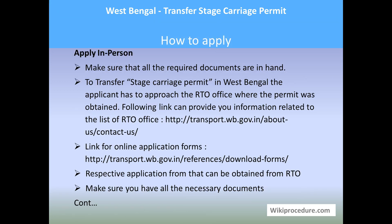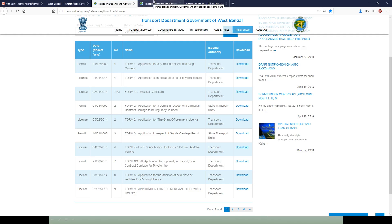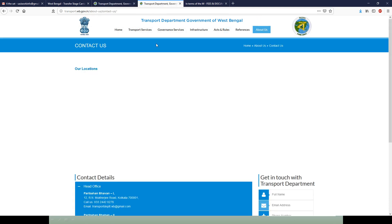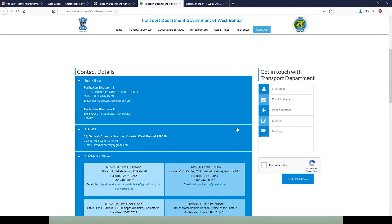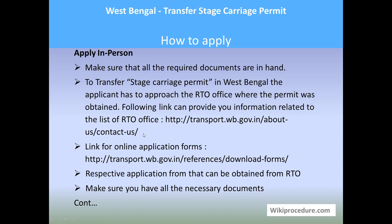Let us see how to apply in person. Make sure all the required documents are in place, because missing even one document will cause your application to be rejected. To transfer stage carriage permit in West Bengal, the applicant has to approach the RTO office where the permit was applied. The contact link provided here will take you to the West Bengal government transport portal, which has contact details of RTO offices, so choose the appropriate RTO office for your area.